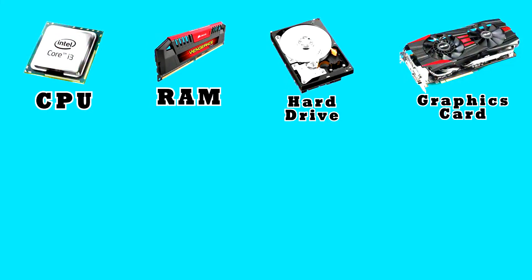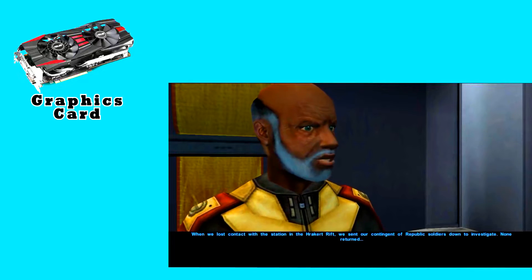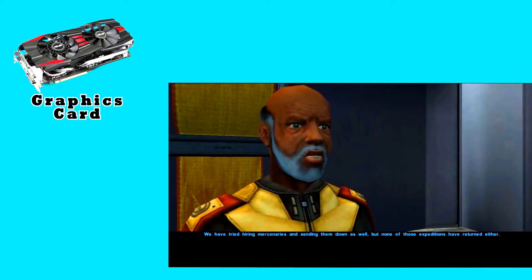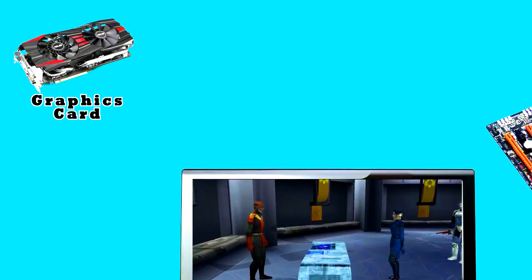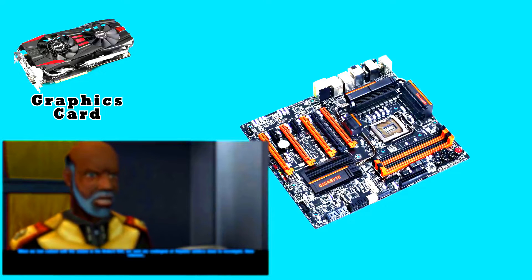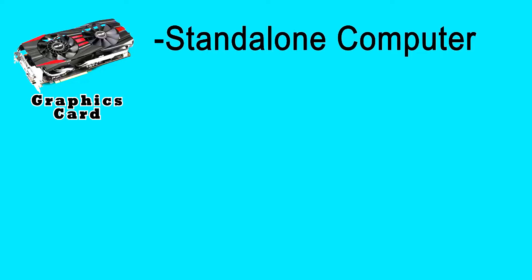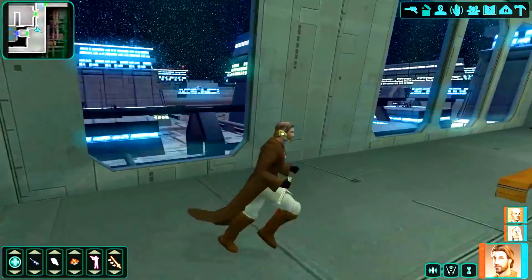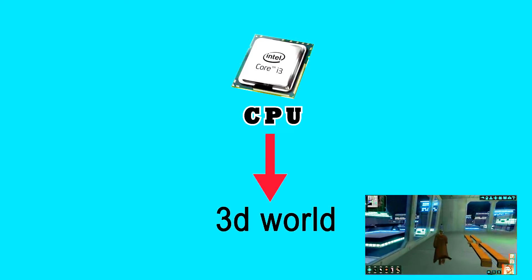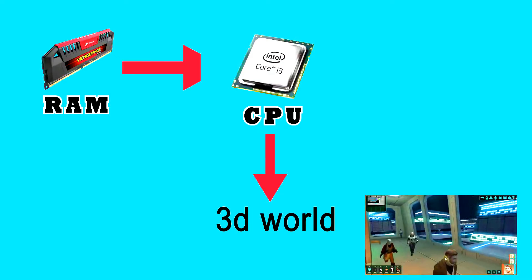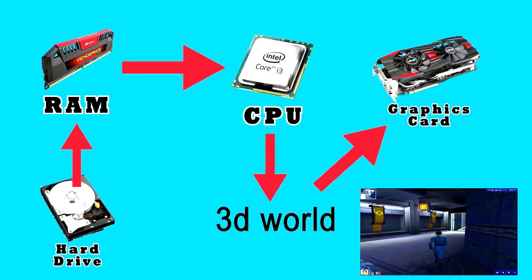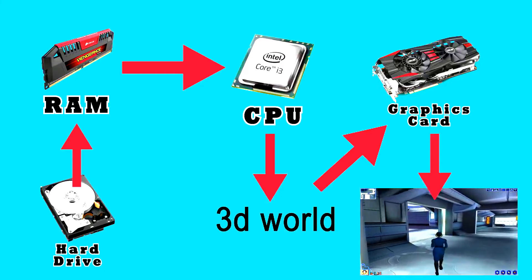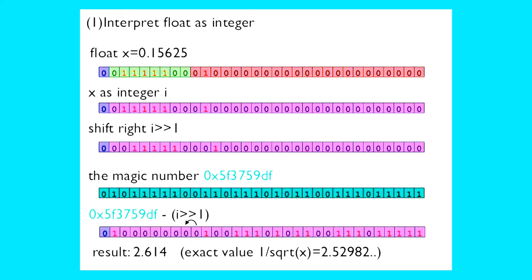And finally, we get to the graphics card. With all of the calculations going on in your computer to turn ones and zeros into a constantly updated three-dimensional world, the final and most important step is to display that on your monitor. Your graphics card is essentially an entire computer in and of itself, dedicated to figuring out what pixels need to light up on your screen, in what color, and at what time. Your CPU creates the world and knows where everything is, using data stored in RAM loaded from your hard drive, but it's your graphics card that figures out what it's supposed to look like based on where you're standing in the world.